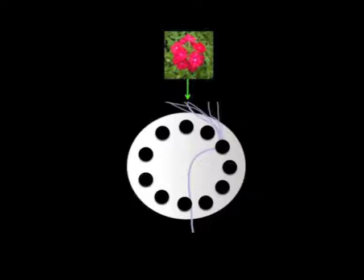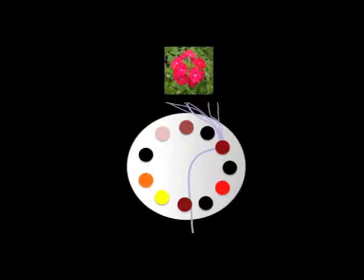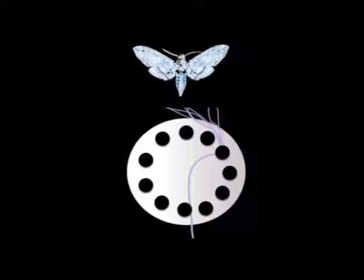For example, in response to a floral scent input, projection neurons produce the following firing pattern. While for a pheromone scent, a completely different firing pattern is observed.